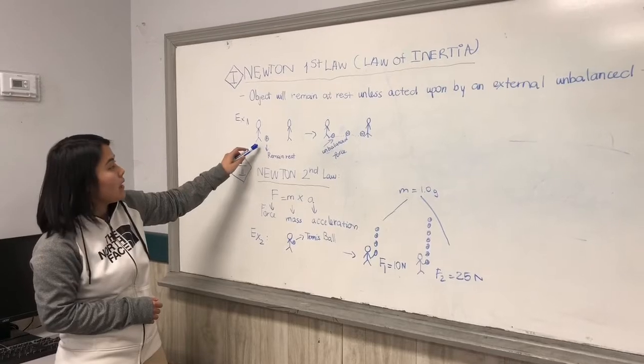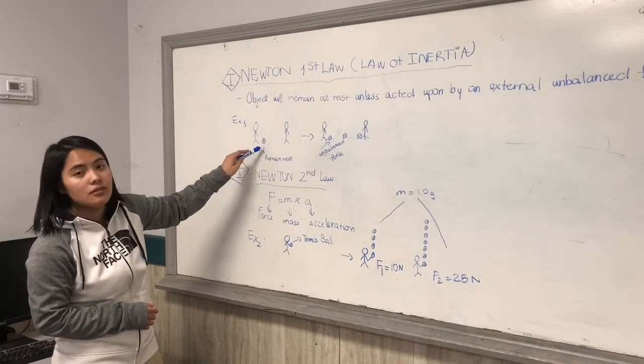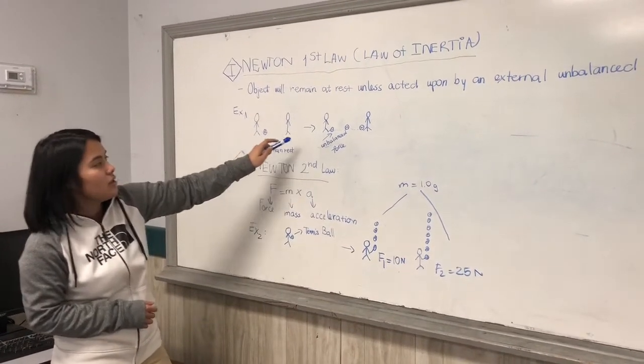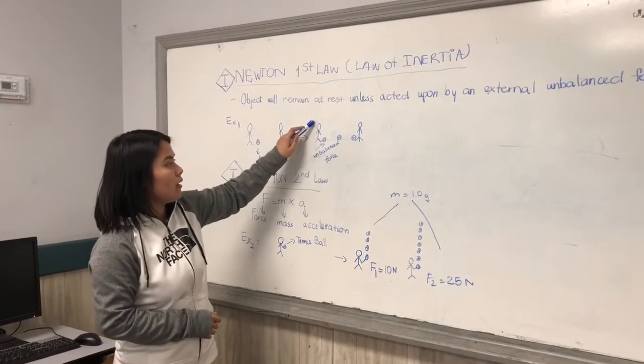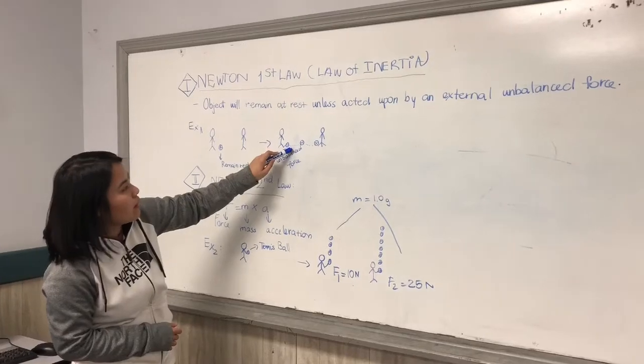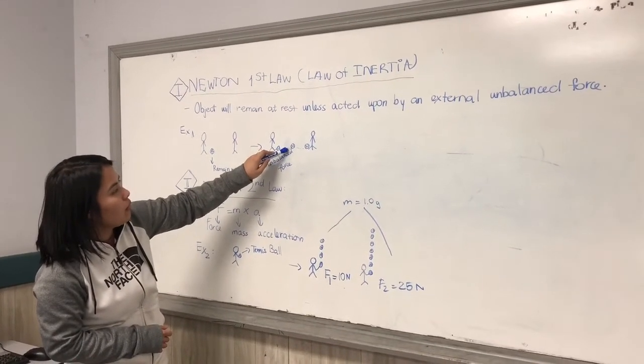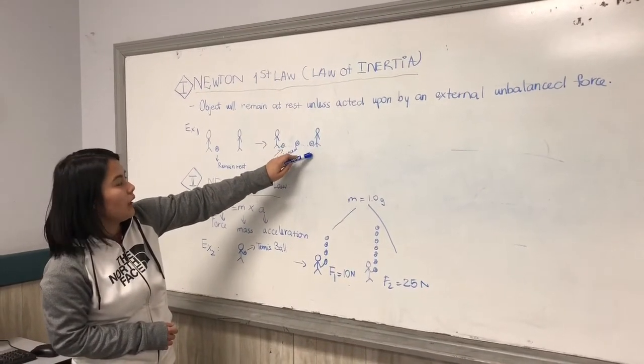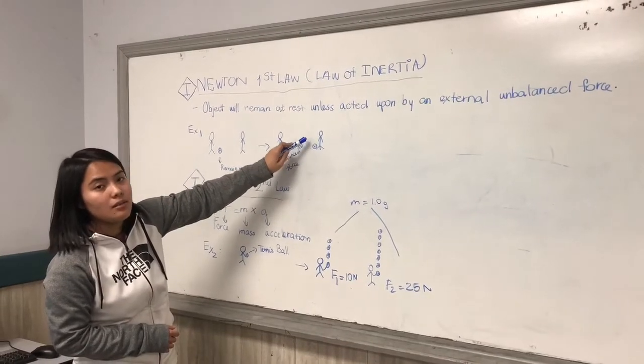As you can see, the ball is still remaining at rest until the first soccer player applies an unbalanced force and acts upon it. You can see the ball keeps rolling, rolling to the second player, and the second player will stop the ball. At this time, it will remain at rest as well.